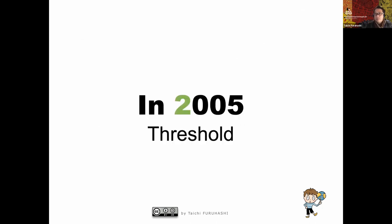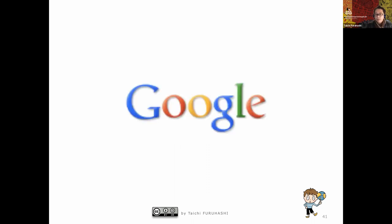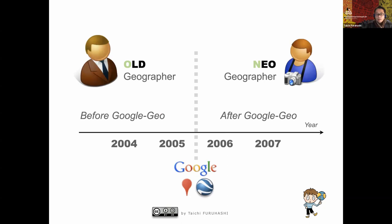The year 2005 is a threshold year. What happened? Google Maps and Google Earth launched in 2005 — Google Maps in February and Google Earth in June. Before and after Google's geo services, the situation changed fundamentally.